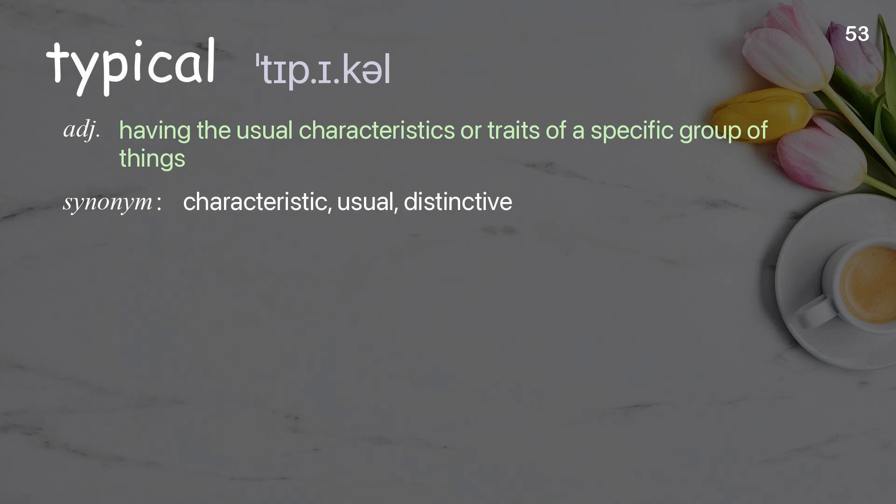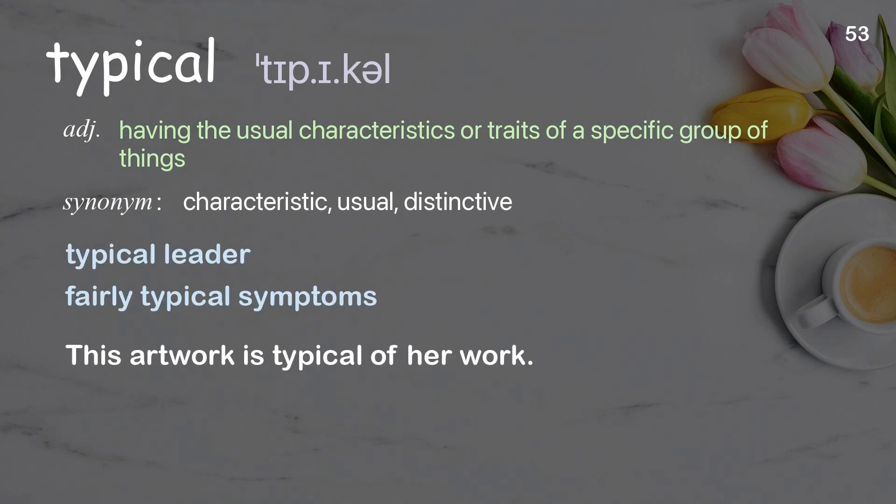Typical: having the usual characteristics or traits of a specific group of things. Examples: typical leader, fairly typical symptoms. This artwork is typical of her work.